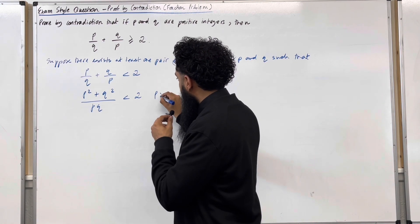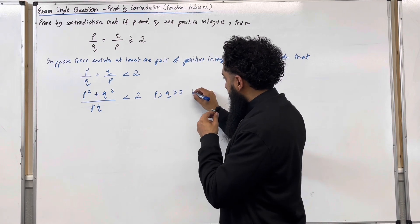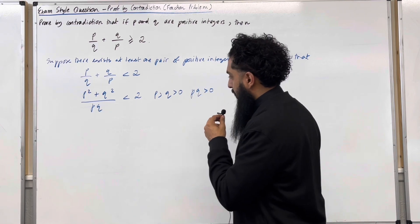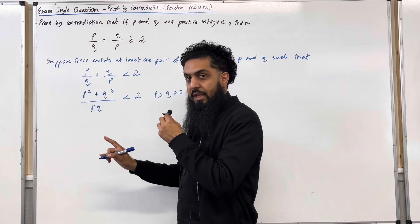Now we know that p and we know that q is more than 0. So the product, p times q, has to be more than 0. I can multiply both sides of this inequality by pq.